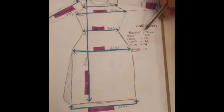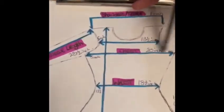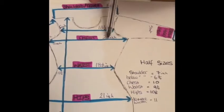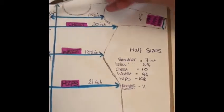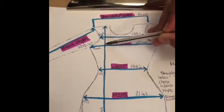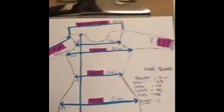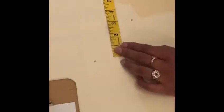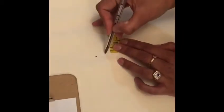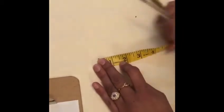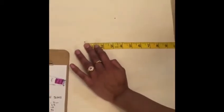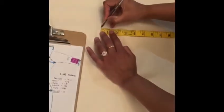The third measurement we need is the half measurement from the chest area, which is 10 inches, and coming down from the shoulder to there is 8 inches. So from the shoulder down 8 inches and across 10 inches, and just mark it there.